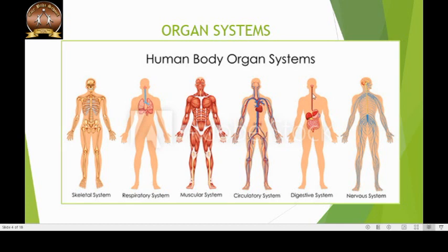The digestive system consists of the mouth, the food pipe, the stomach, the small and large intestine, the anus and other accessory organs, which perform the function of ingestion, digestion and absorption of food. The nervous system consists of the brain, the spinal cord and a network of nerves, which perform the function of coordinating the functions of all the other organ systems.